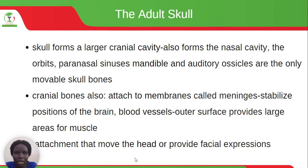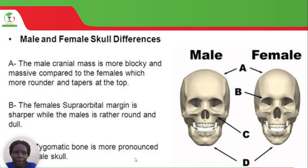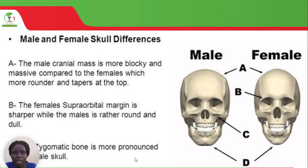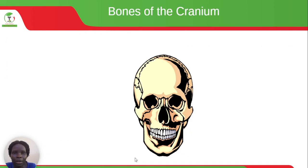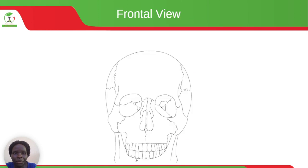Let's look at the male and female skull differences. Difference A: the male cranial mass is more blocky and massive compared to the females, which are more rounded and tapered at the top. The female's supraorbital margin is sharper, while the male's is rather round and dull. Difference C: the zygomatic bone is more pronounced on the male skull than in the female. We also have a view of the skull bones showing these features.